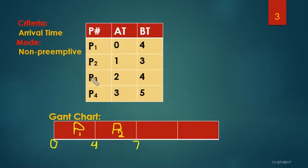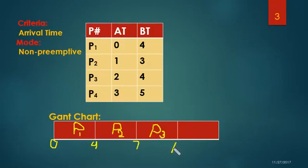Now I am going to pick up the next process, which is P3, that has arrived at time 2. The burst time for P3 is 4. I will place P3 here. The total becomes 7 plus 4, which is 11, so I put 11 here.